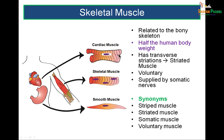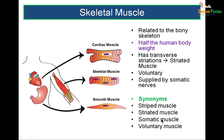Coming to skeletal muscle: it is striated muscle, having striations across its length. It is multinucleated and forms half of the body weight. It is supplied by the somatic nervous system. It is also called striped muscle, striated muscle, somatic muscle, or voluntary muscle.